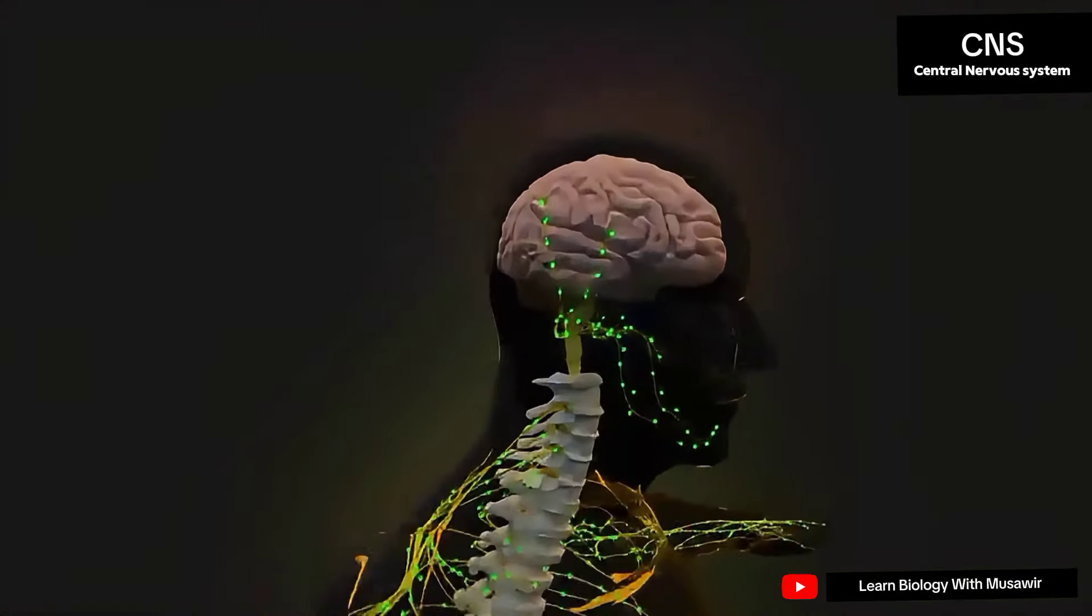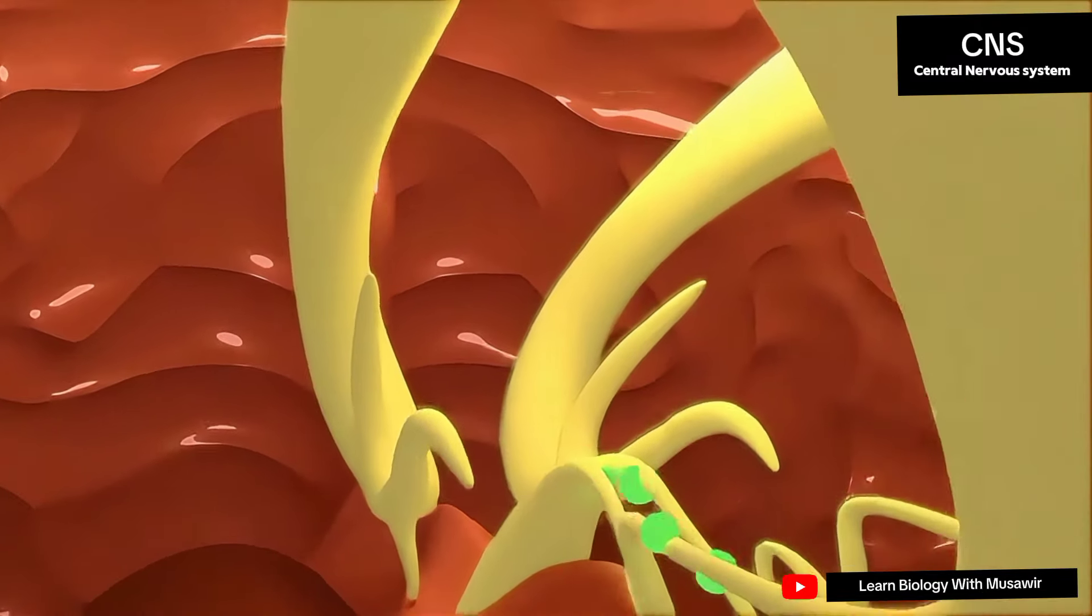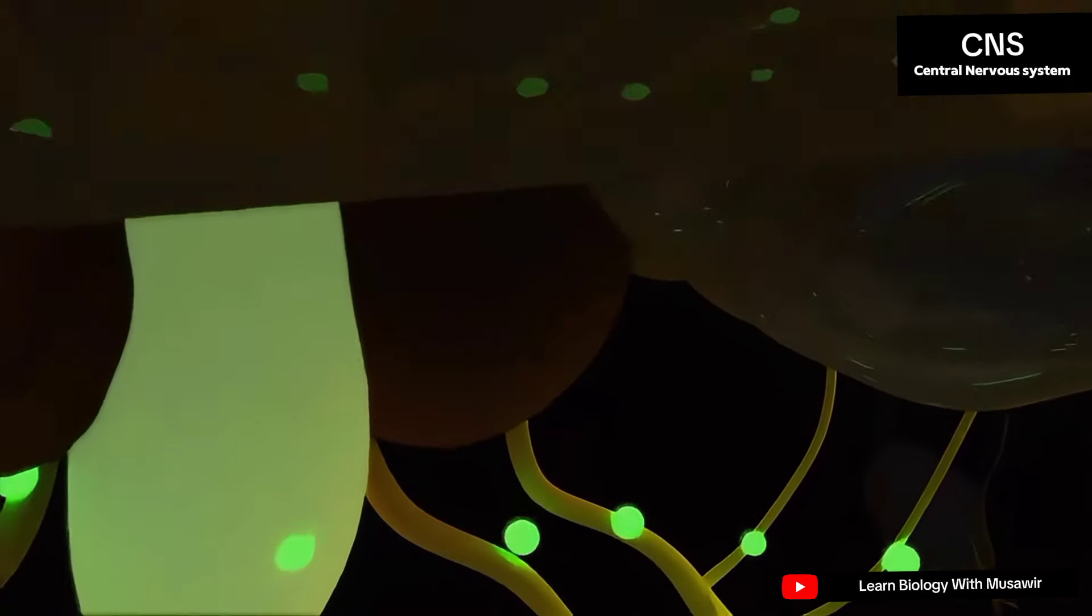Starting at the top is your brain. Your brain is the central processing unit of your body, and it coordinates and computes all the electrical signals that are sent throughout your nervous system and your entire body.